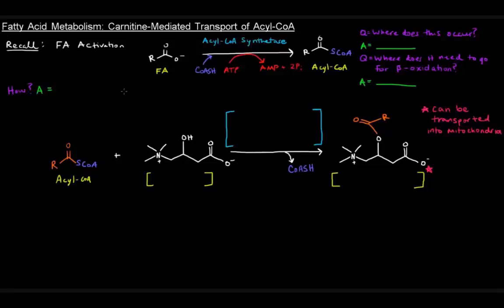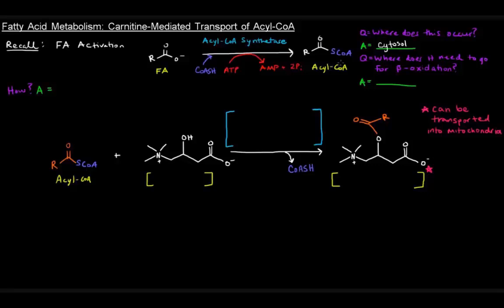Previously we talked about fatty acid metabolism and how we break these fatty acids down for energy. Before we do that, we have to activate fatty acids to their activated form called acyl-CoAs. The enzyme that does that is called acyl-CoA synthetase, which adds a coenzyme A and requires two ATP equivalents. Now, where are these acyl-CoAs actually broken down? They're broken down via beta-oxidation, which occurs in the mitochondrial matrix.